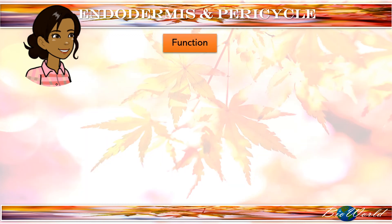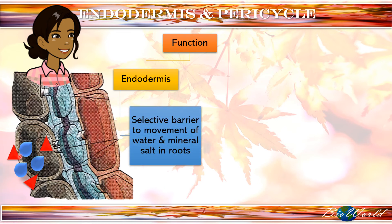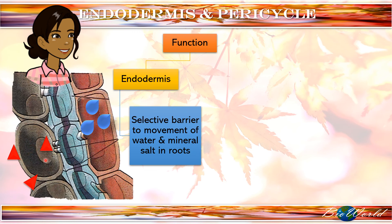The role of the endodermis and the pericycle are completely different. The endodermis plays an important role in water uptake at the root. During water uptake, minerals also enter the root. But at the endodermis, due to the impermeable casparian strip, only water is able to diffuse into the rest of the plant by osmosis. The mineral salts will only be transported based on active transport depending on the need of the plant. In this way, the endodermis provides a selective barrier to the movement of water and mineral salt. We will learn more about this in semester 2.